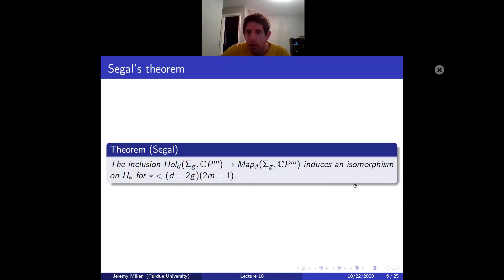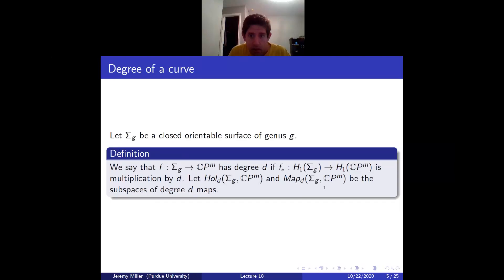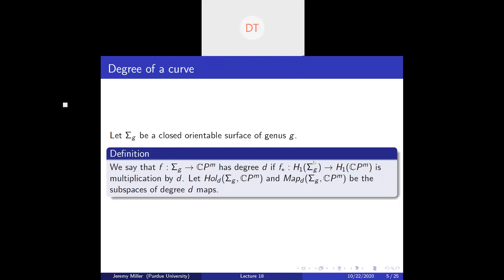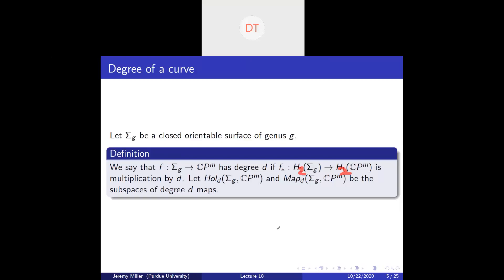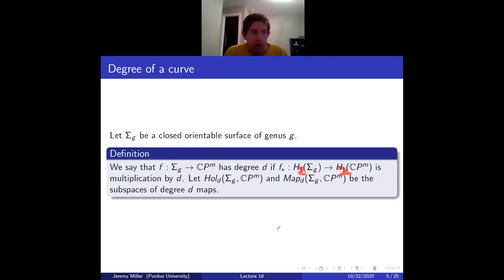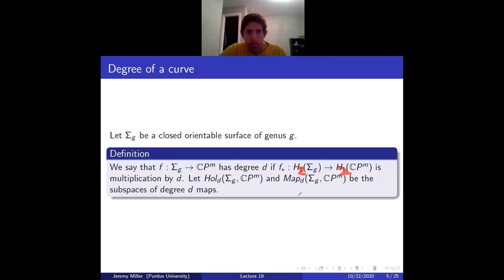Another way of saying it: if you have a family of continuous maps and you want to ask whether you can deform it to a family of holomorphic maps, if your maps all have sufficiently high degree, then you can. There's a typo on the previous slide — the homological degree index should be 2.